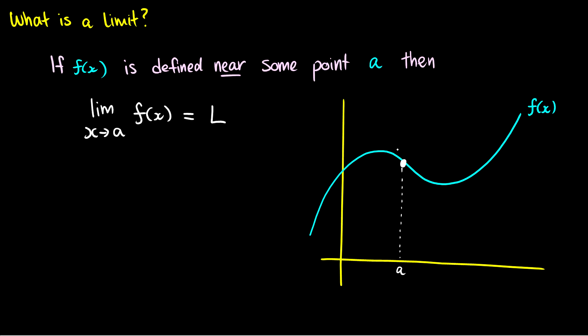Here's a curve f of x. Imagine I'm somewhere on the x-axis at some point x, with a corresponding value on the curve. As I move x closer to a, the point on the curve is also going to move closer to the limit. This value right here is our limit L, and as x moves closer to a on the x-axis, the point on our curve just moves closer to L.